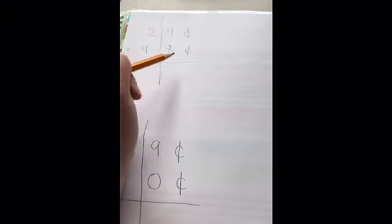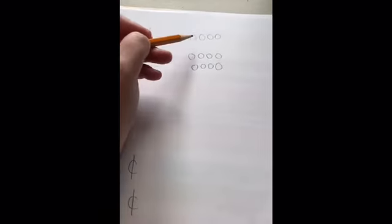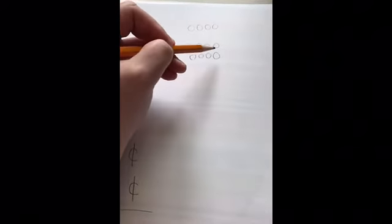Remember, we start right to left. So I'm going to do four ones plus eight ones, and then I'm going to count them. Four, five, six, seven, eight, nine, ten, eleven, twelve.